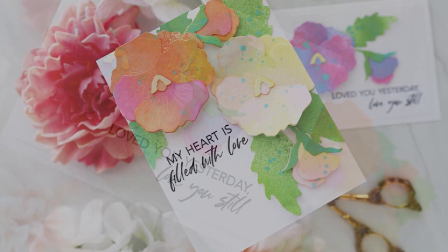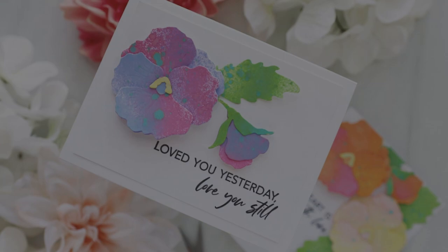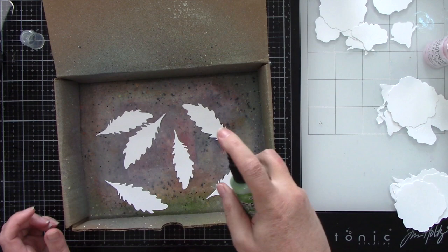Hey crafty friends, it's Joy here for Honeybee Stamps. Today I used Distress Oxide sprays to color the Lovely Layers Pansy die. I started by cutting all of my pieces from white cardstock. I used Neenah Classic Crest Solar White cardstock.